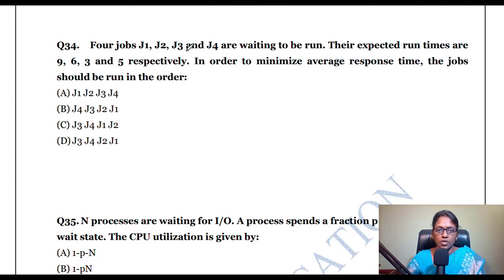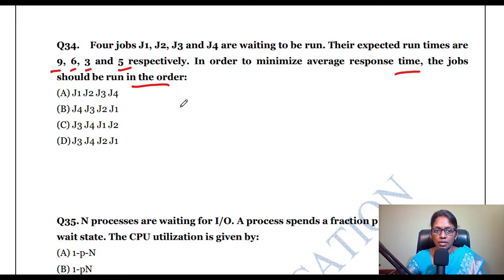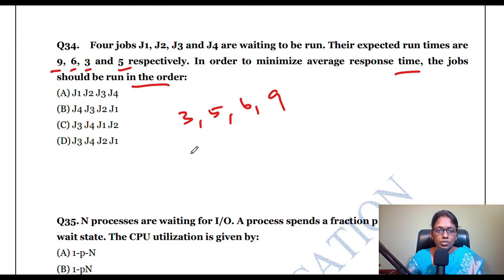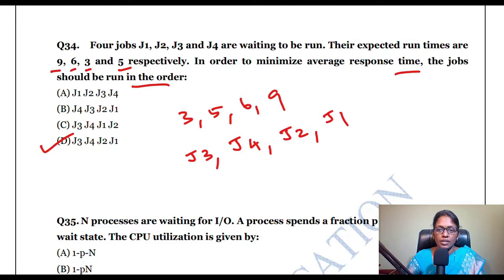Four jobs J1, J2, J3, J4 with run times 9, 6, 3, and 5 respectively. To minimize average response time, execute in ascending order of run time: 3 (J3), 5 (J4), 6 (J2), 9 (J1). So the order is J3, J4, J2, J1 — option D is the correct answer.